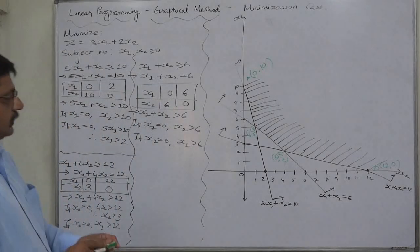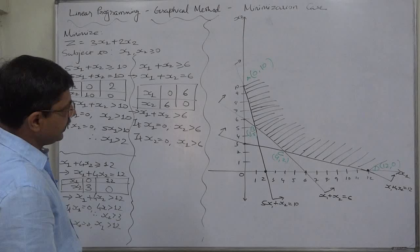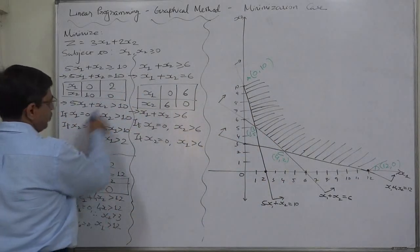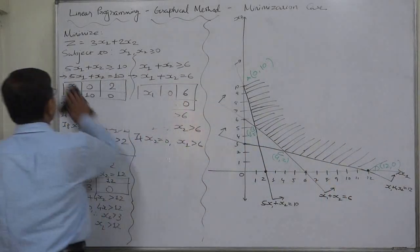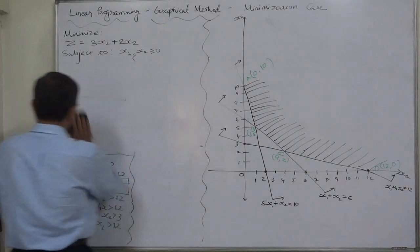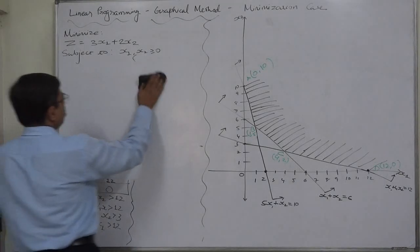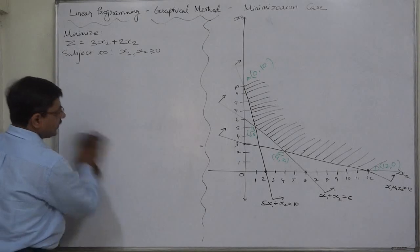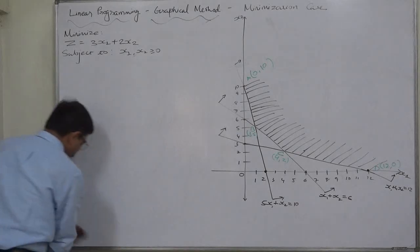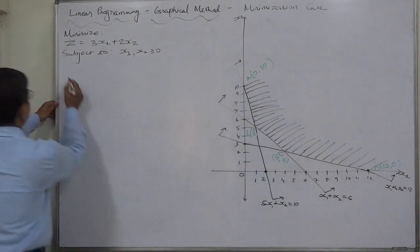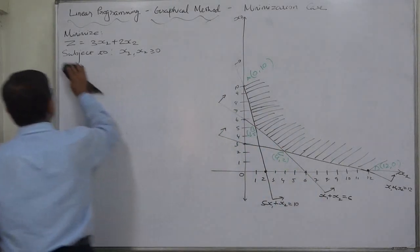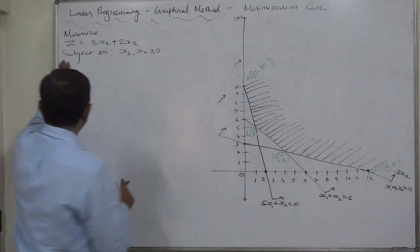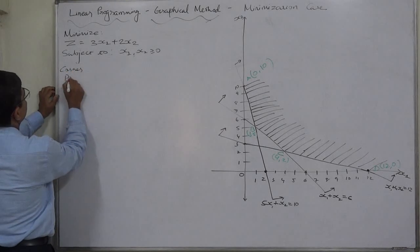We have four vertices on the feasible region. The fundamental law of linear programming states that the optimal solution lies on the corner points of the feasible region. Let's check what happens to the objective function at all these corner points, and also verify whether the optimal solution satisfies all the constraints. Let's set up a table with corner point coordinates and the value of Z equals 3x1 plus 2x2.